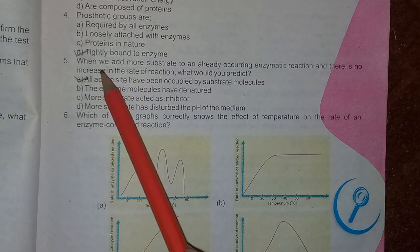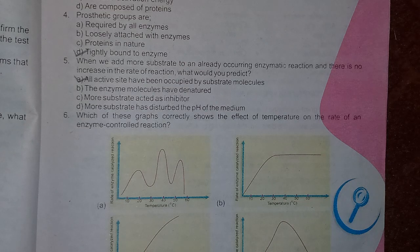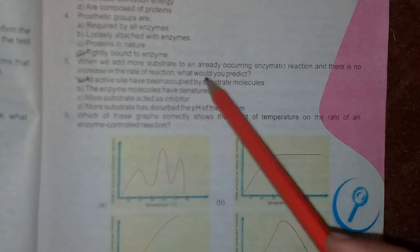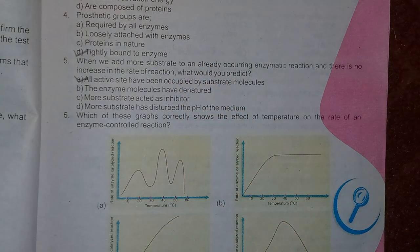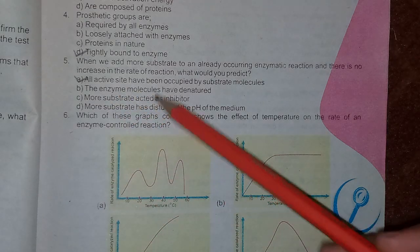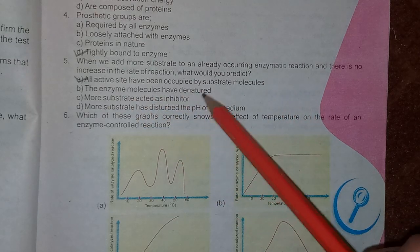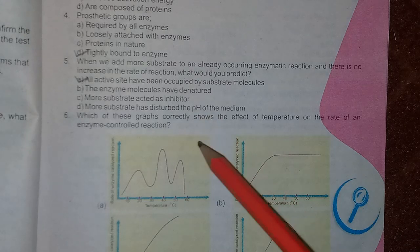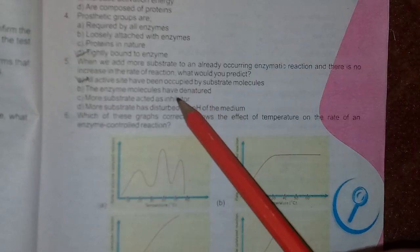MCQ 5: when we add more substrate to an already occurring enzymatic reaction, and there is no increase in the rate of reaction, what would we predict? The enzyme is available but we add more substrate, yet we see no difference. What does it mean? All active sites have been occupied by substrate molecules - saturation of active sites. Yes. The enzymes have denatured? No. More substrate acts as inhibitor? No. More substrate has disturbed the pH of the medium? No. The correct answer is option A: all active sites have been occupied by substrate molecules.